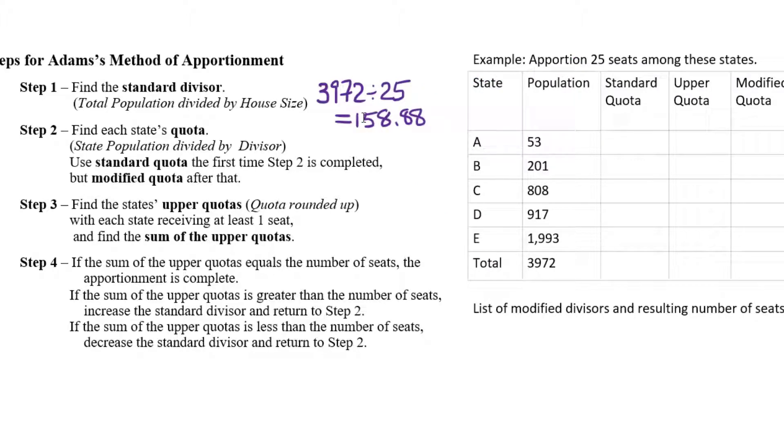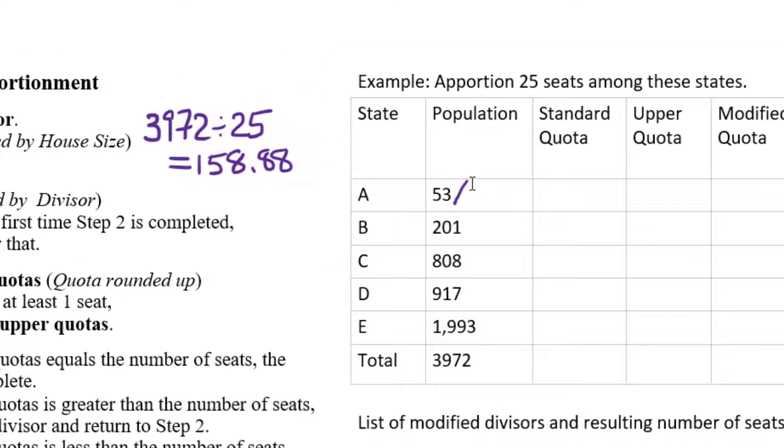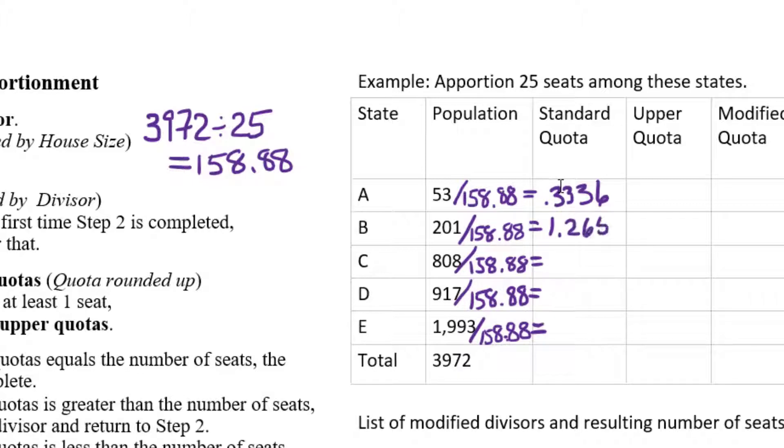What this represents is the number of people in the population who are served by one representative, one seat. So for each 158.88 people, there's one representative in the legislature or parliament or whatever the case may be. So that's step one. Step two is to take each state's population and divide it by this number to get what's called the state's standard quota. So I'm going to divide all of these populations by 158.88. 53 divided by 158.88 is going to give us a standard quota of 0.3336. 201 divided by 158.88 is 1.2651.